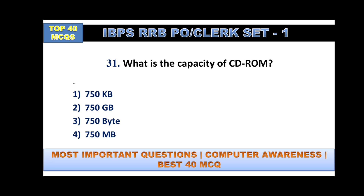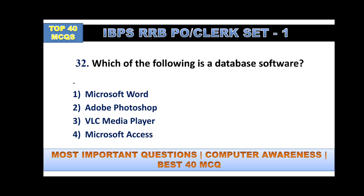What is the capacity of a CD-ROM? The capacity is 750 MB — megabytes. MB means megabyte, GB means gigabyte, and KB means kilobyte.